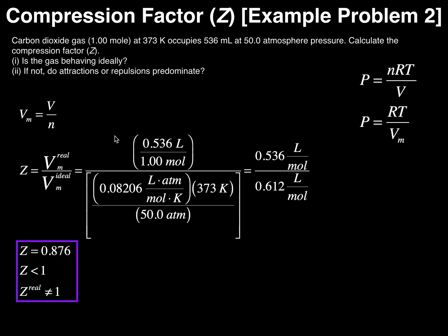In this video we're going to continue our discussion of the compression factor and work a second example problem where we're asked to calculate Z. So first of all let's read the problem. Carbon dioxide gas, one mole at 373 Kelvin, occupies 536 milliliters at 50.0 atmospheric pressure.